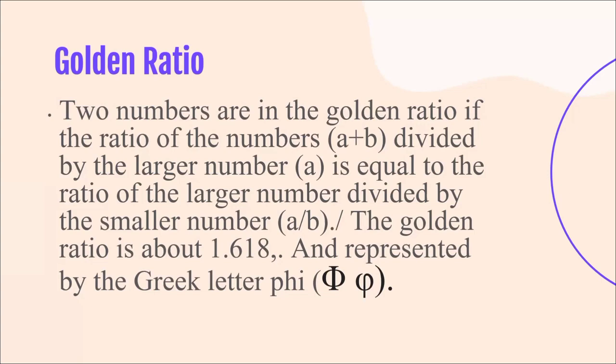The Golden Ratio is about 1.618 and is represented by the Greek letter Phi — that is the symbol we can see below. In short, the sum of two numbers, when divided by the larger number, is equal to the result when the larger number is divided by the smaller number.